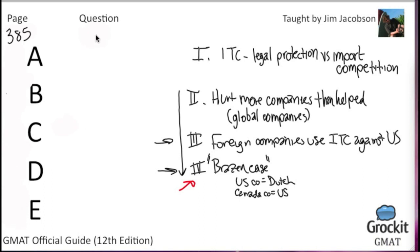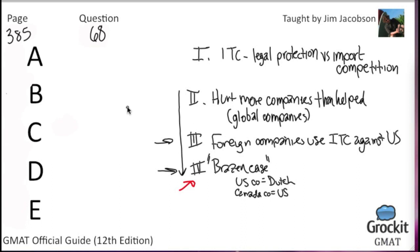Okay, number 68. The passage suggests that which of the following is most likely to be true of United States trade laws — so this is another inference question. When we think about US trade laws, that's going to be the stuff in the second or third paragraph, because the first one is just more about the ITC, and the fourth paragraph is just this specific case. How this affects things at the company level is really paragraphs two and three, so our answer, if anywhere, is probably going to be there. But we need to see what the answer choices actually say.